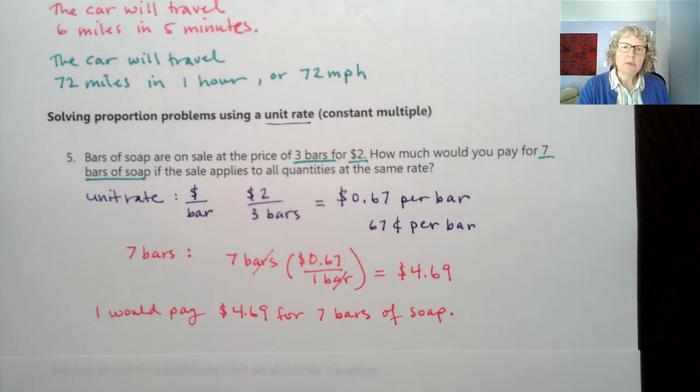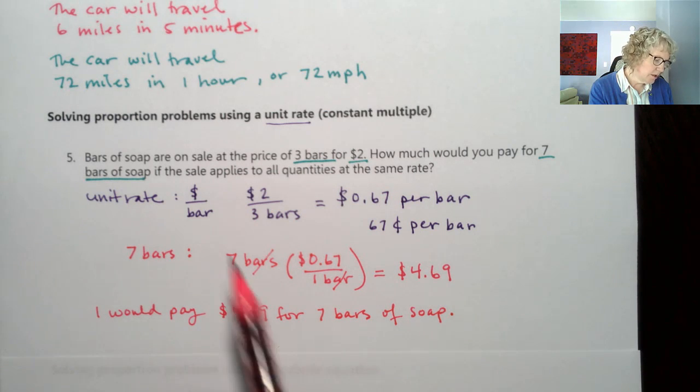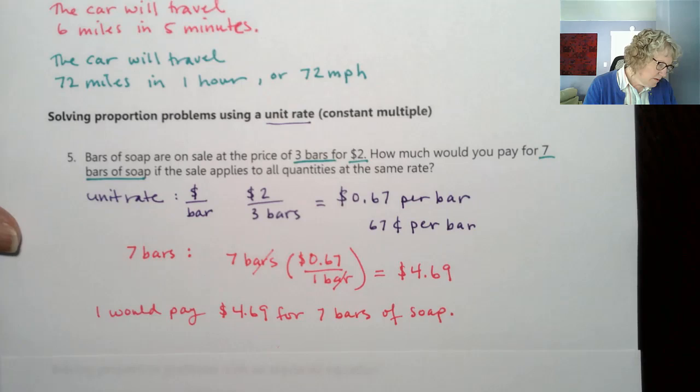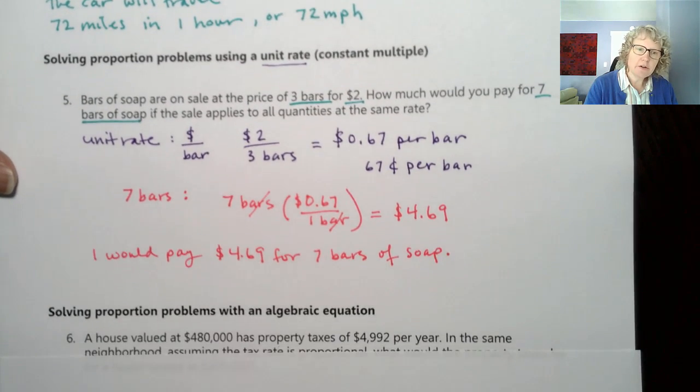So we didn't use a visual there, but we could have. Instead, this time we found a unit rate and then we multiplied it by the number of bars we had. That's our second method.